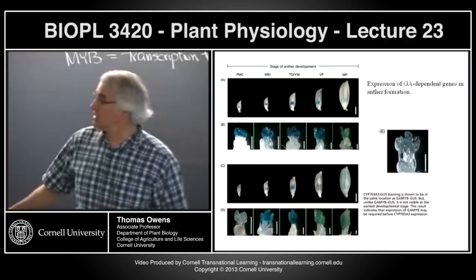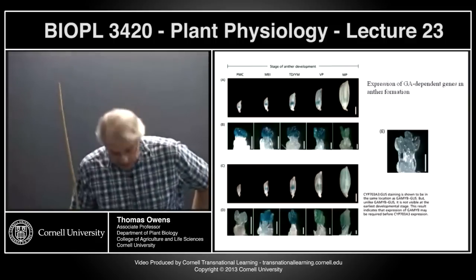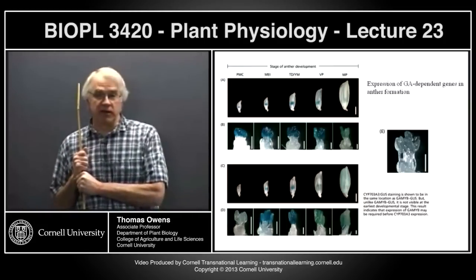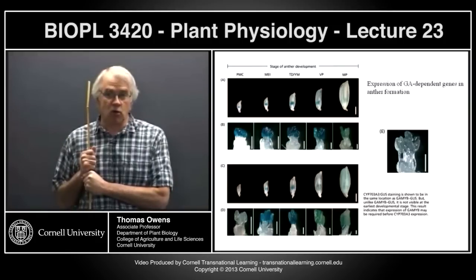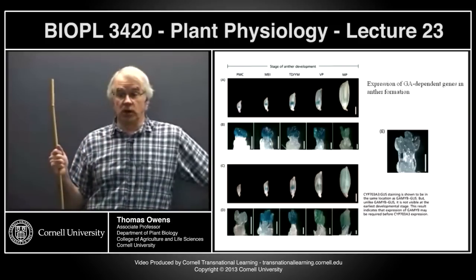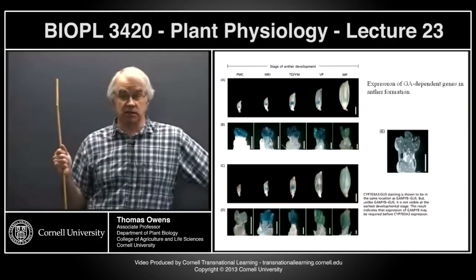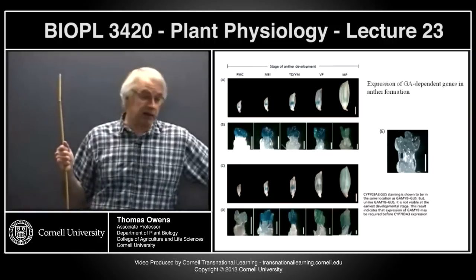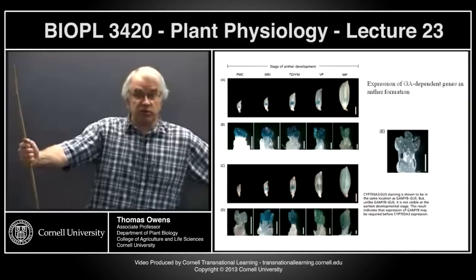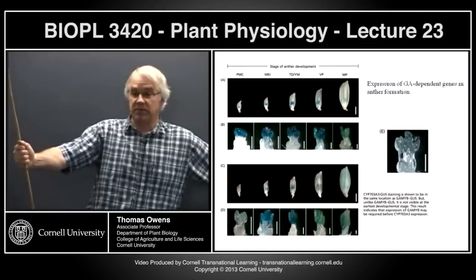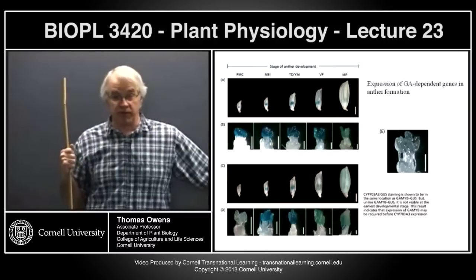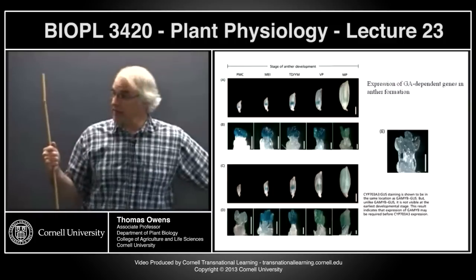Let's finish up with the role that gibberellic acid plays in pollen development. This is becoming more important in plant breeding because one way to promote outcrossing is to prevent the formation of pollen in certain plants. If the plant can't produce its own pollen, it can only be fertilized by pollen from another plant.